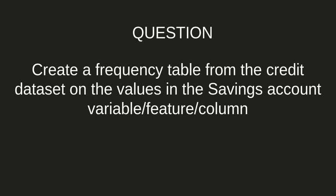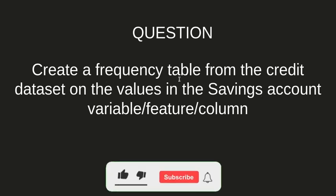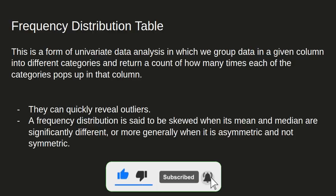The question for this first practical is: create a frequency table from the credit dataset — the dataset we loaded in the last tutorial — on the values in the savings account variable. Variables are also called features or columns. So we're going to use the savings account column to create a frequency table.